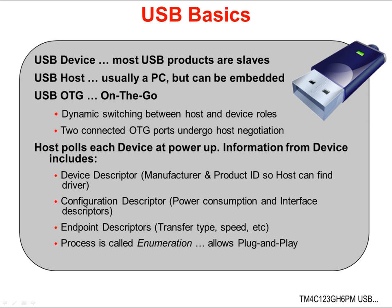When a device is connected to a host, the host polls the device for information that describes it. This information is called descriptor tables. The device descriptor contains the manufacturer and product ID codes. The configuration descriptor contains the power consumption and interface types required. The endpoint descriptor describes the transfer types, speed, and so on for each of the endpoints required of the port. The process of the host querying the device for all of these structures and then configuring itself is called enumeration, and that's what allows plug and play to operate.